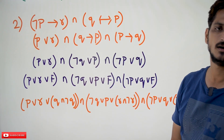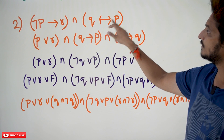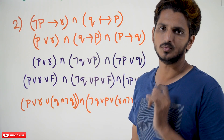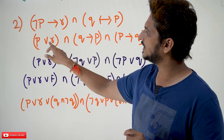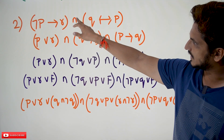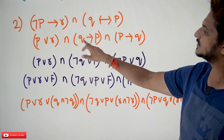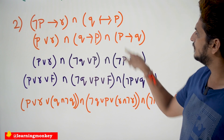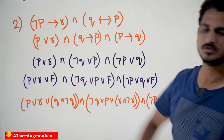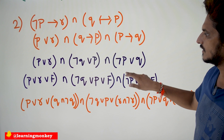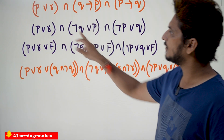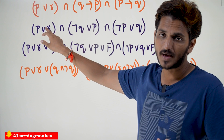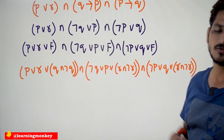The second example: negation p implies r, conjunction, q double implies p. Now p implies q can be written as negation p disjunction q. Similarly, negation p implies r can be written as p disjunction r. Conjunction, q double implies p can be written as q implies p conjunction p implies q. These implications convert to negation q disjunction p, negation p disjunction q, and p disjunction r. So now it is in the form of a product, but the individual terms are not yet in the form of max terms — you have to bring them into the form of max terms.